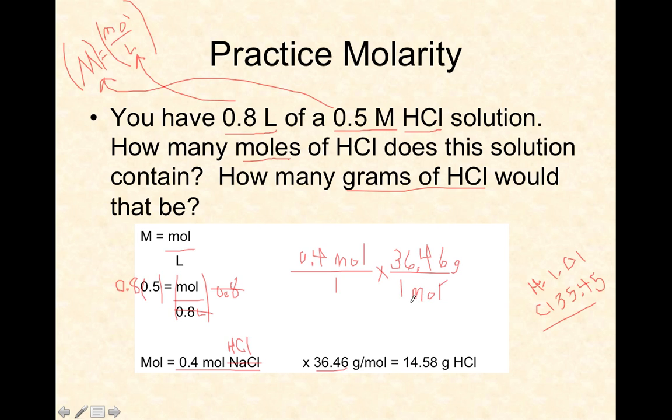You're left with the unit of grams HCl, which is great, and you should get 14.58. And that's how you do molarity problems.